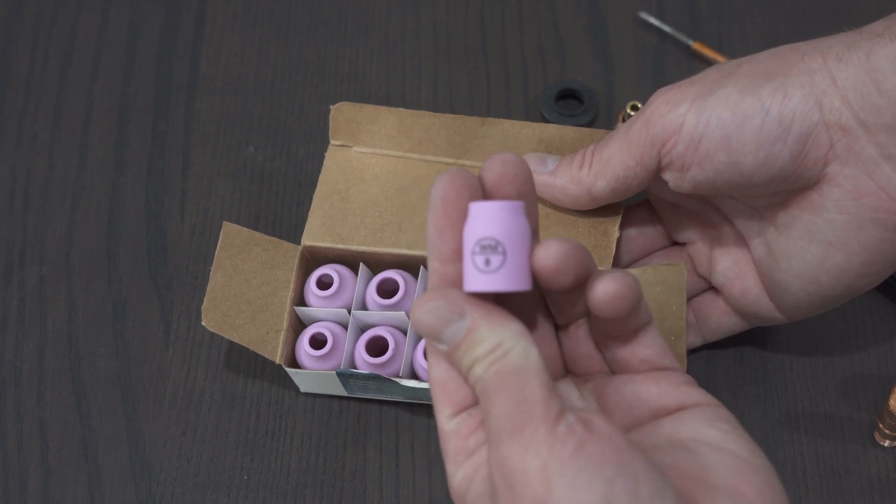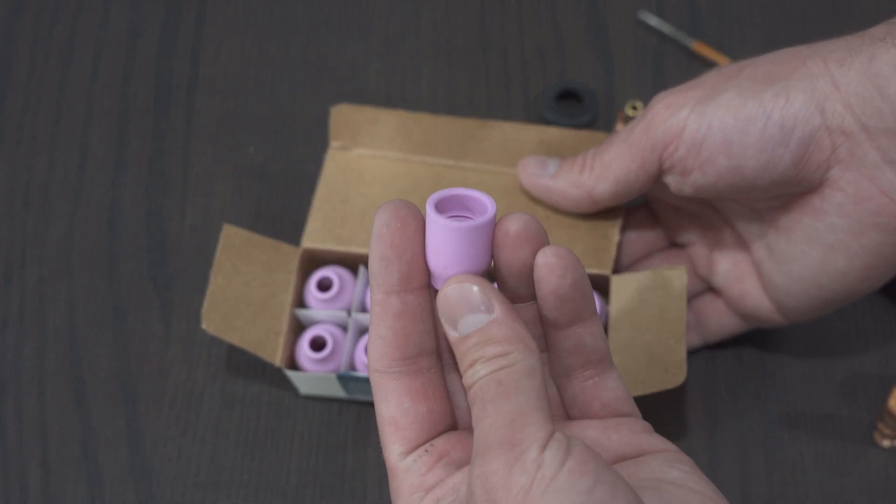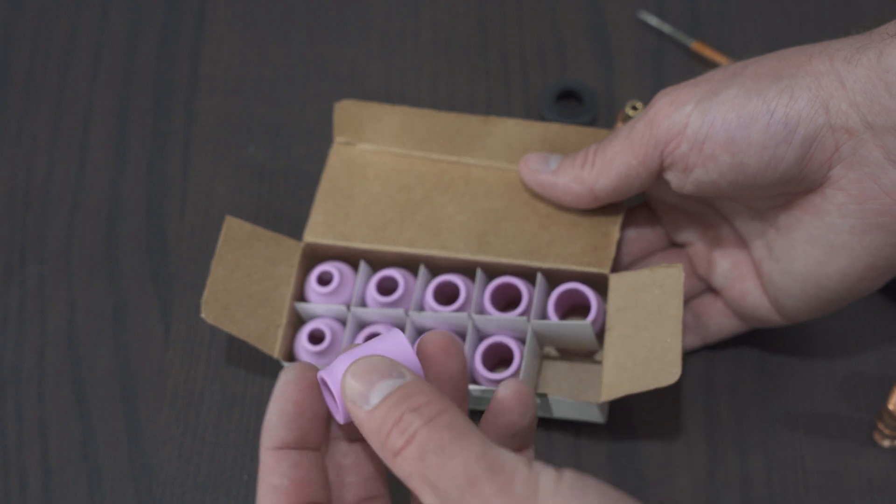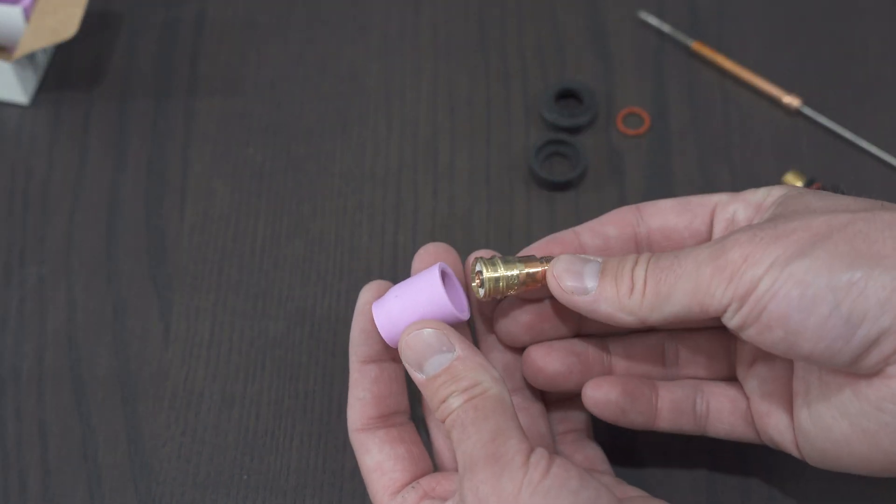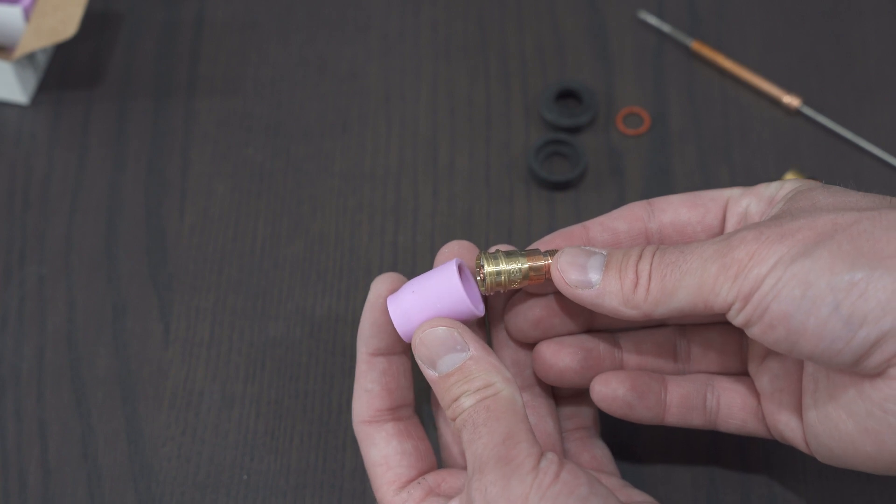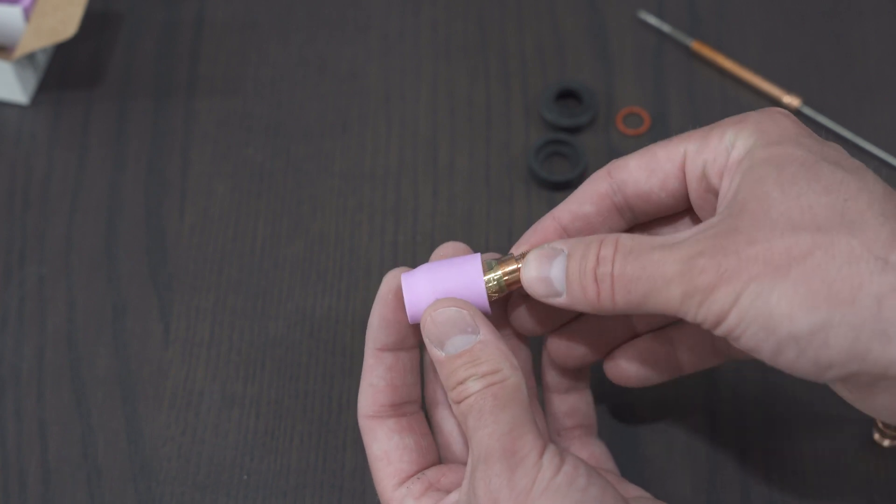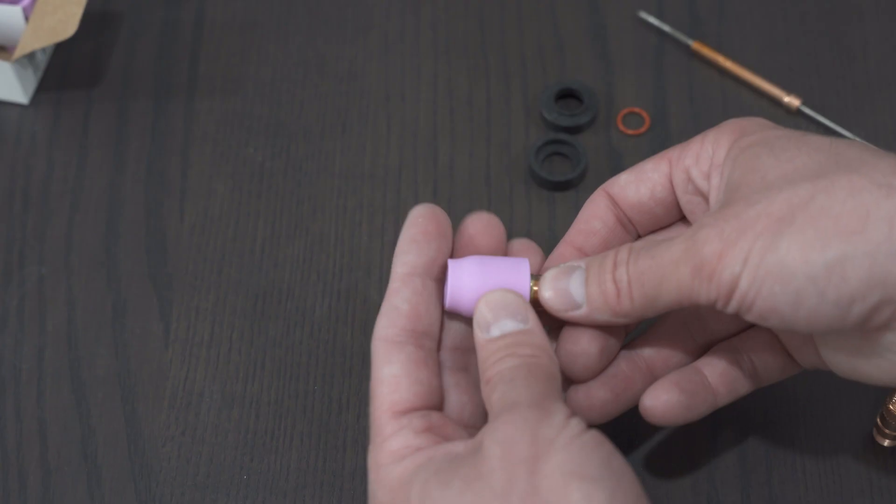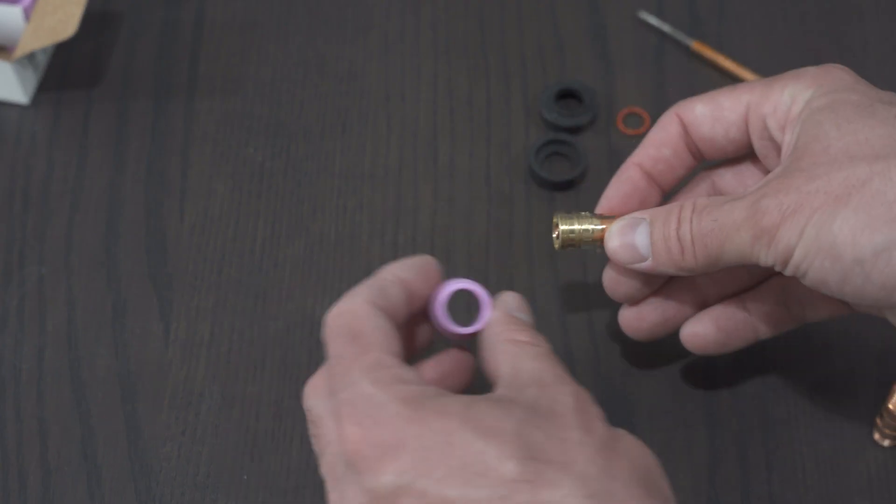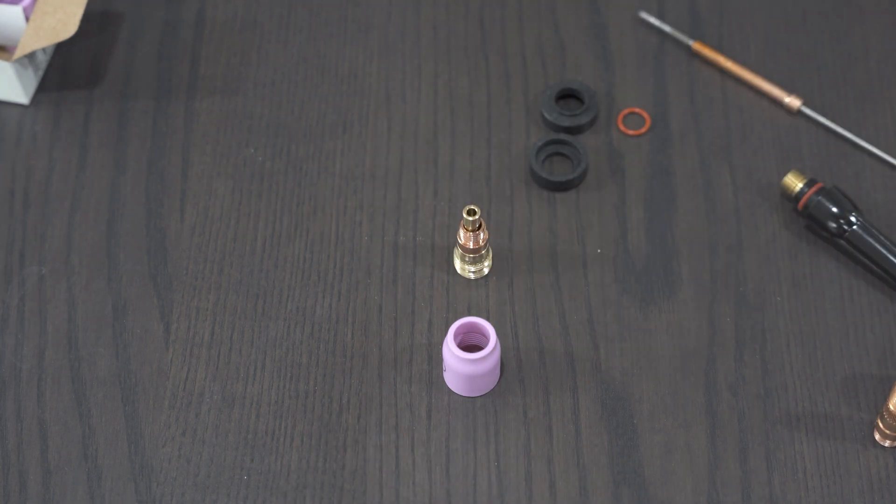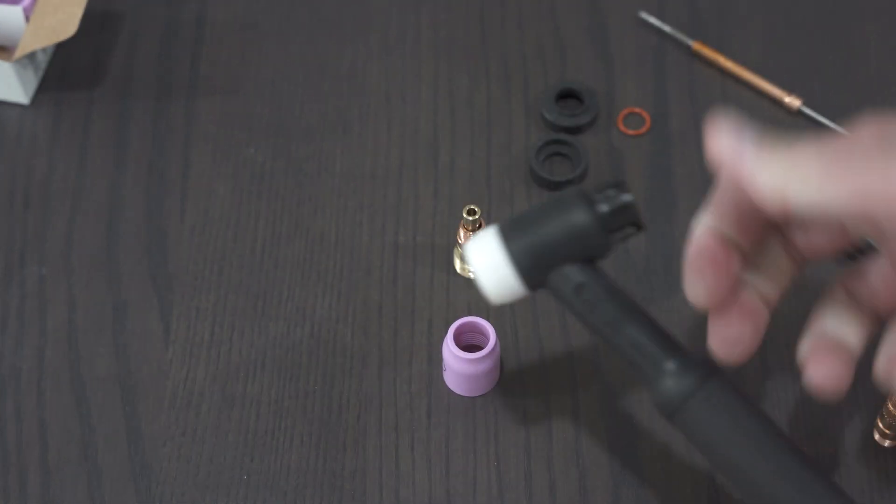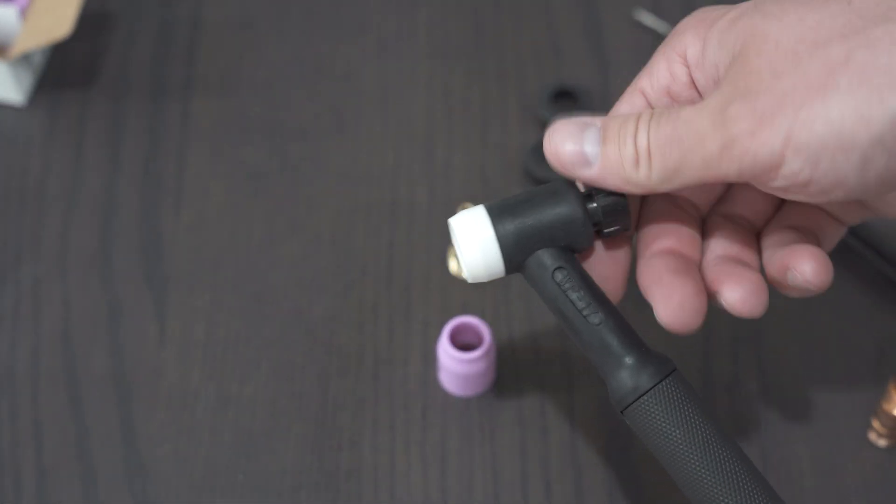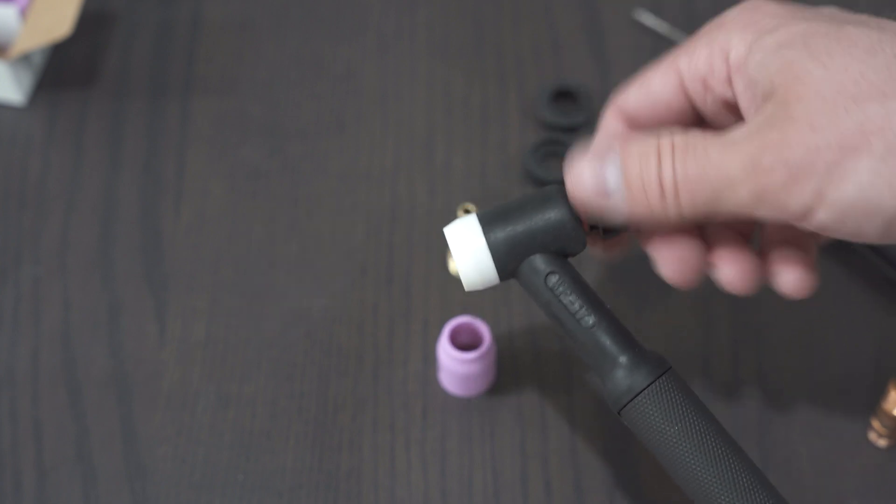Let's just go with the 8 here. You can see it's got the Weldmonger logo and there's threads up inside of it. So that's what the cups look like. If you check out the stubby gas lens adapter, they just thread together like this. Once they're threaded in, you'll be ready to go. What we need to do is now get the torch and we're going to just take the back cap off just for a second so you can see the whole process.